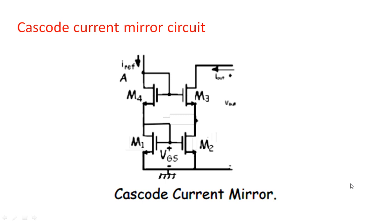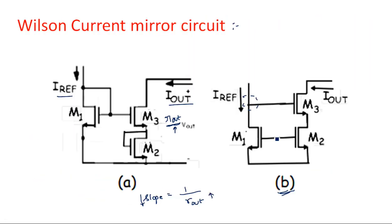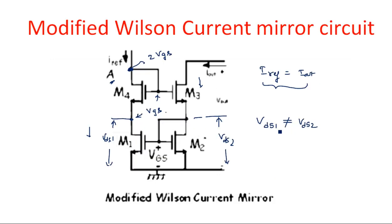This configuration is a modified version of the Wilson current mirror circuit. In the Wilson current mirror circuit, it was later modified by introducing one more transistor M4. However, we have a problem that VDS1 is not equal to VDS2 — the voltages on either side of transistors M1 and M2 may not be equal as they do not have the same resistors inside. So the modified Wilson current mirror circuit may also not have proper Vmin and Rout.